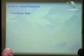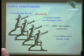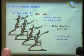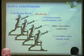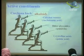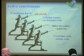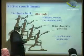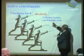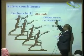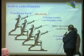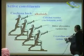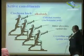Active constituents of Cinchona: we have alkaloids. Catecholamines specific for Cinchona — also called quinotannic acid. We have the alkaloids as number one, number two catecholamines or quinotannic acid, bitter glycosides — quinovine — and crystalline quinovic acid.